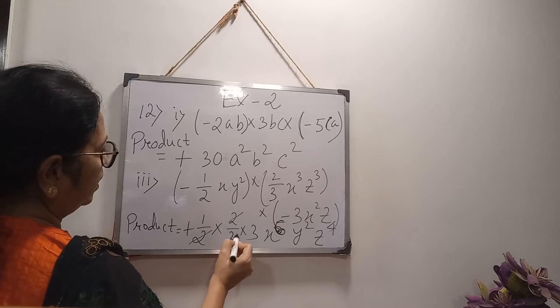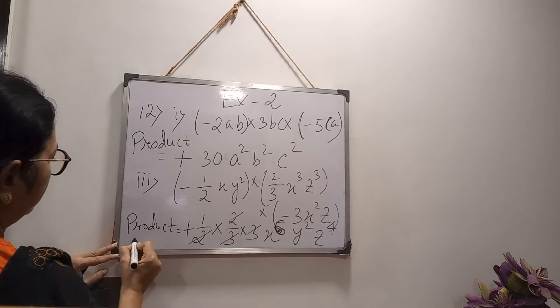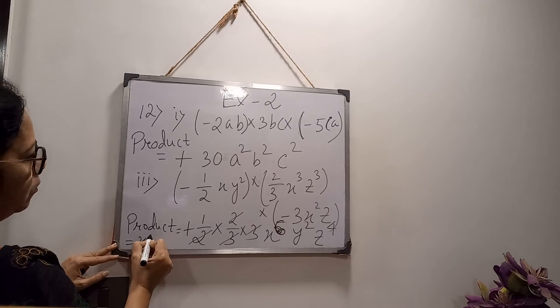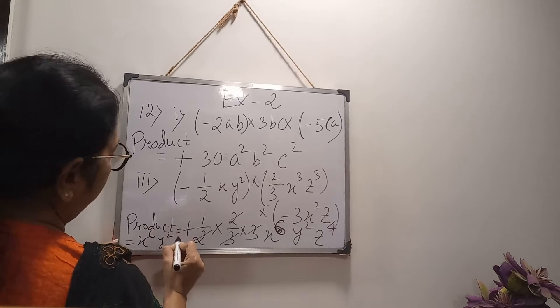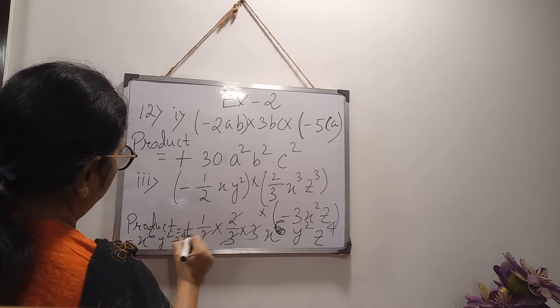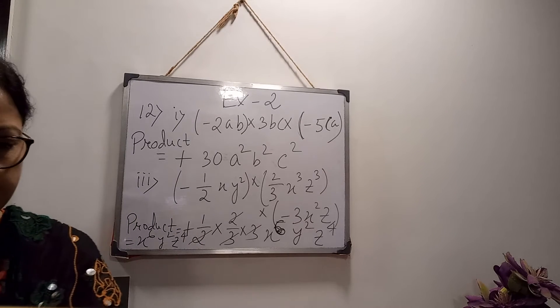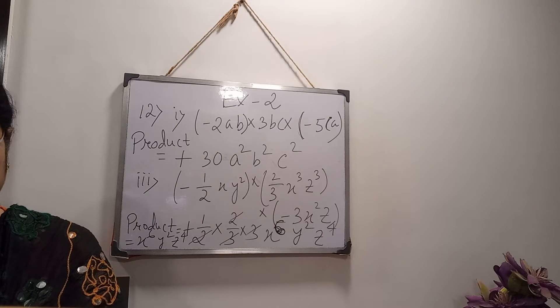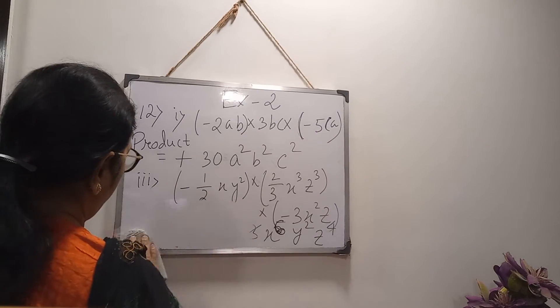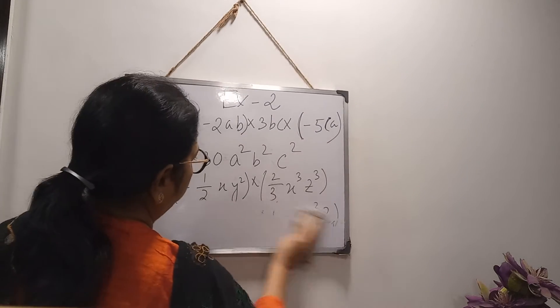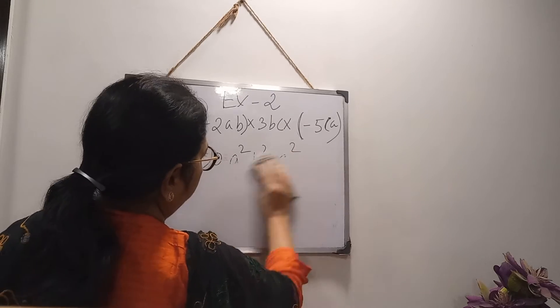Now 2 and 2 you can cancel, 3 and 3 you can cancel. So your answer is coming X to the power 6, Y square, Z to the power 4. Clear? Then next one. And don't forget to write down product, otherwise half mark will be deducted.